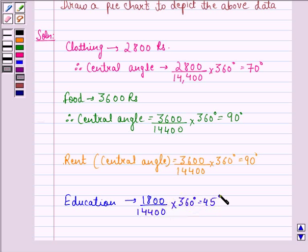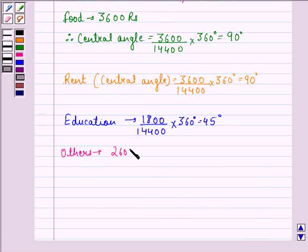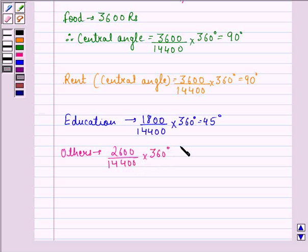For others, it will be 2,600 divided by 14,400, multiplied by 360 degrees, which is equal to 65 degrees.